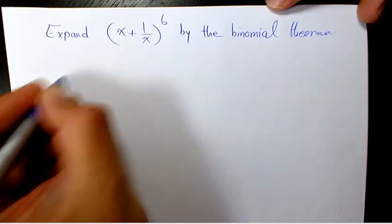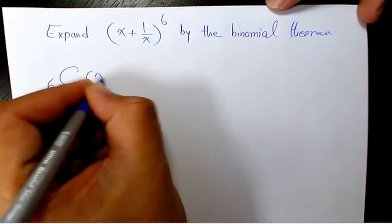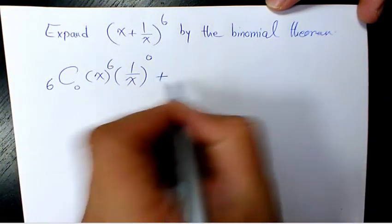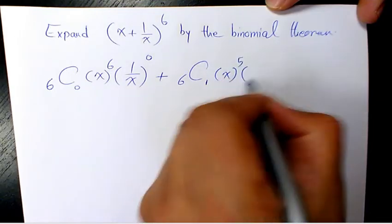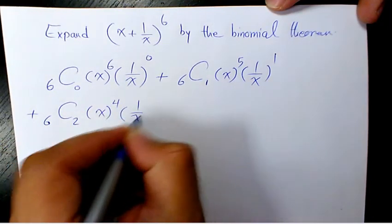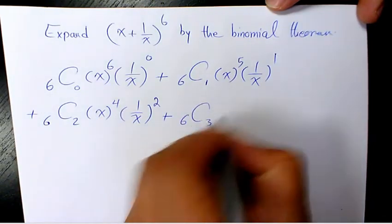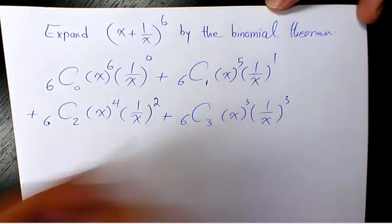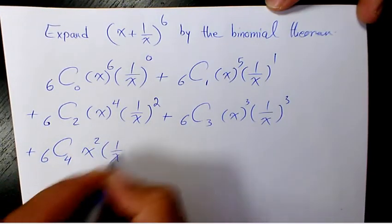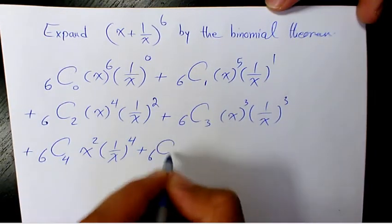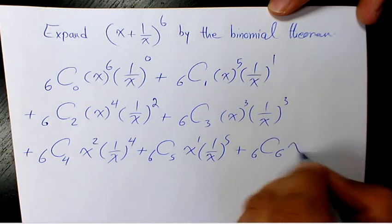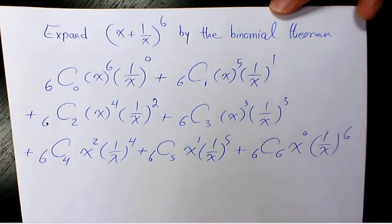If you want to expand it, the answer is going to be: 6C0 · x^6 · (1/x)^0 + 6C1 · x^5 · (1/x)^1 + 6C2 · x^4 · (1/x)^2 + 6C3 · x^3 · (1/x)^3 + 6C4 · x^2 · (1/x)^4 + 6C5 · x^1 · (1/x)^5 + 6C6 · x^0 · (1/x)^6.